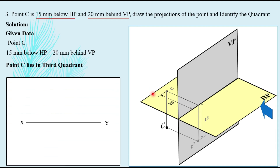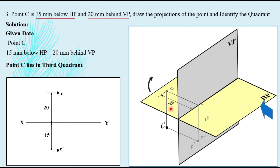Drawing the solution: take the XY line then a vertical projector. For the third quadrant, draw the front view below XY line — take 15 mm below and locate C dash. Then rotate the horizontal plane clockwise 90 degrees. The top view C will appear above XY line at a distance of 20 mm. C dash and C lie on a single vertical projector, since they are two views of the same point.